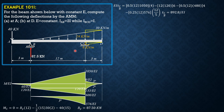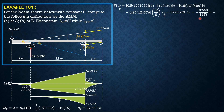Because the result is positive, point C is above the reference tangent at B as shown in the figure. The tangent is sloping down to the right, so θ_B is negative. Using the geometry, tan(θ_B) equals the deviation over 12, so θ_B equals negative 892.8 over 12·EI, which is negative 74.4 over EI.